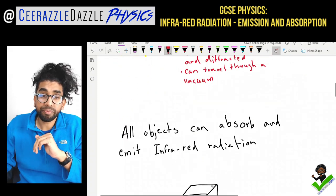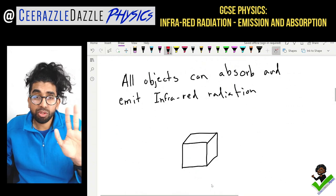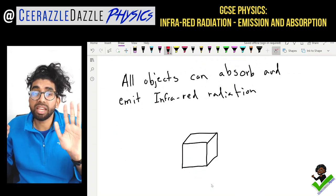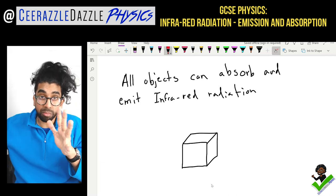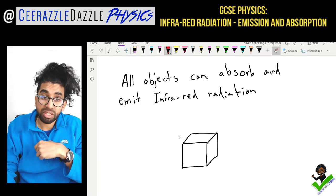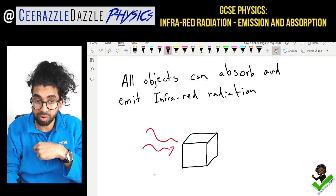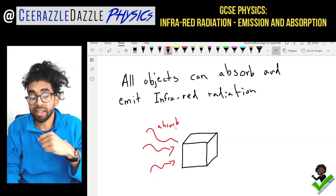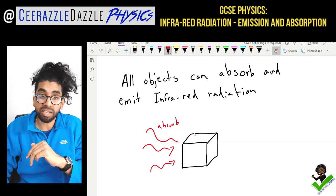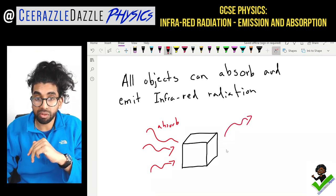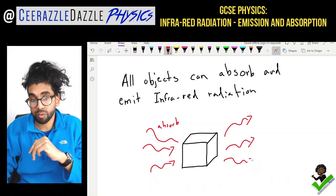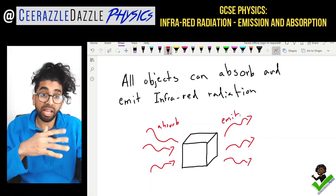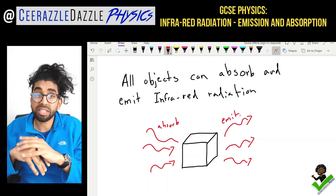All objects can absorb and emit infrared radiation. Absorb means infrared radiation goes into it — the object takes in that heat. Emit means it comes out of it. So all objects can absorb going in and emit going out.